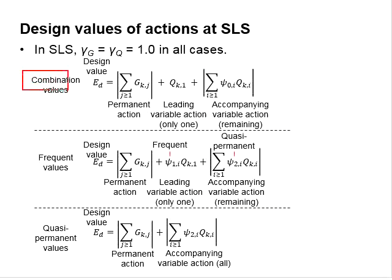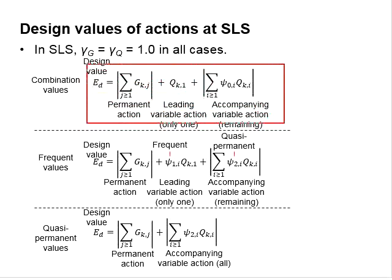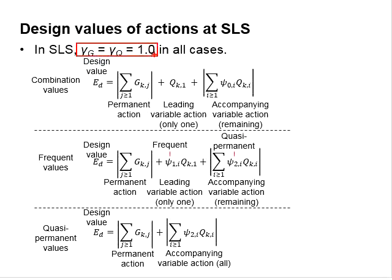For the combination design value, the equation is basically the same as the equation for the ultimate limit state, except the factor of safety is equal to 1.0 for all the GK and QK. Psi naught is being used for all the accompanying variable actions.